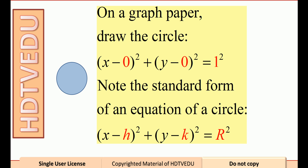On a graph paper, draw the circle x minus 0 squared plus y minus 0 squared equals 1 squared. Note the standard form of an equation of a circle: x minus h squared plus y minus k squared equals radius squared.